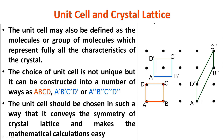The unit cell may also be defined as the molecules or groups of molecules which represent fully all the characteristics of the crystal. The choice of unit cell is not unique — it can be constructed in a number of ways. The unit cell should be chosen in such a way that it conveys the symmetry of the crystal lattice and makes mathematical calculations easy, so that our calculations get simplified.